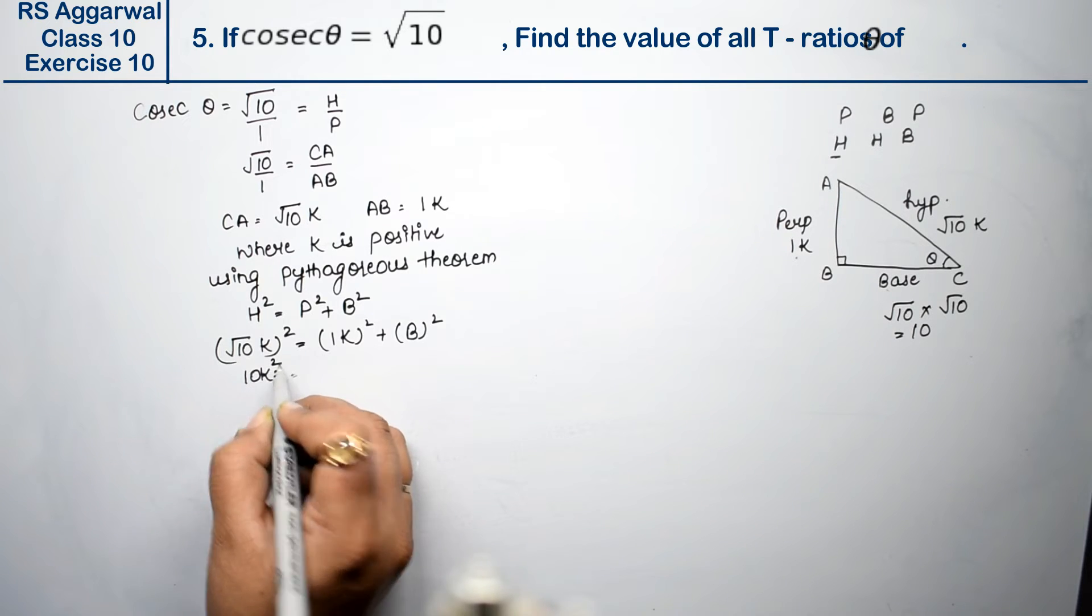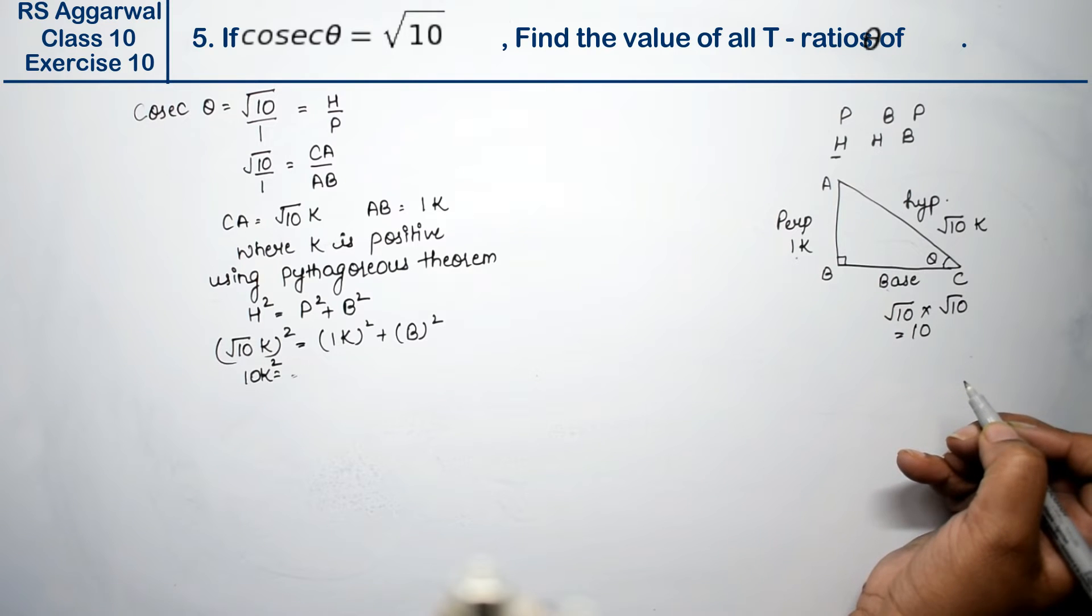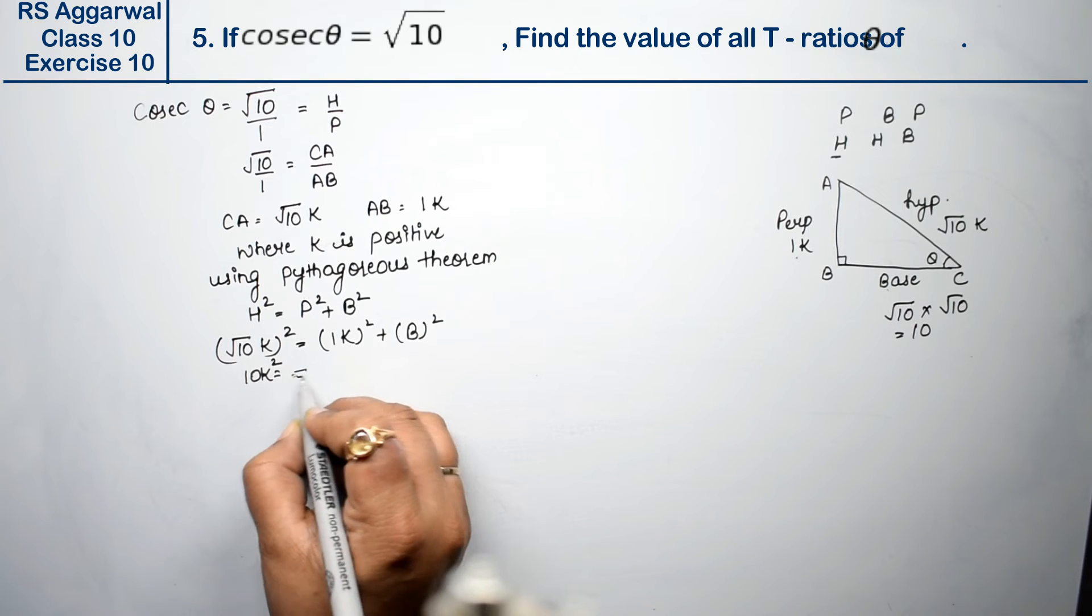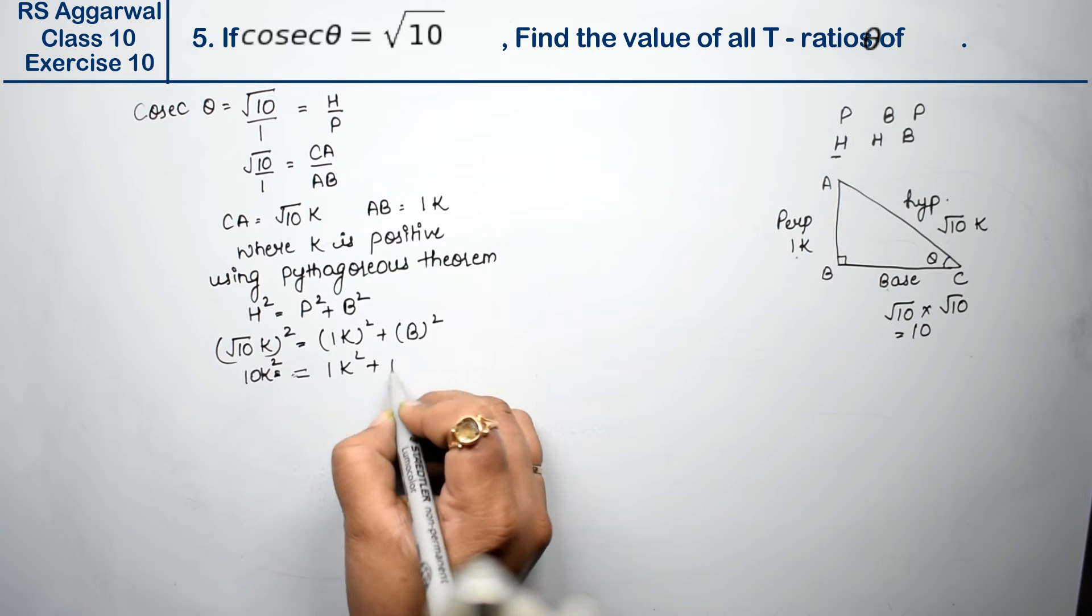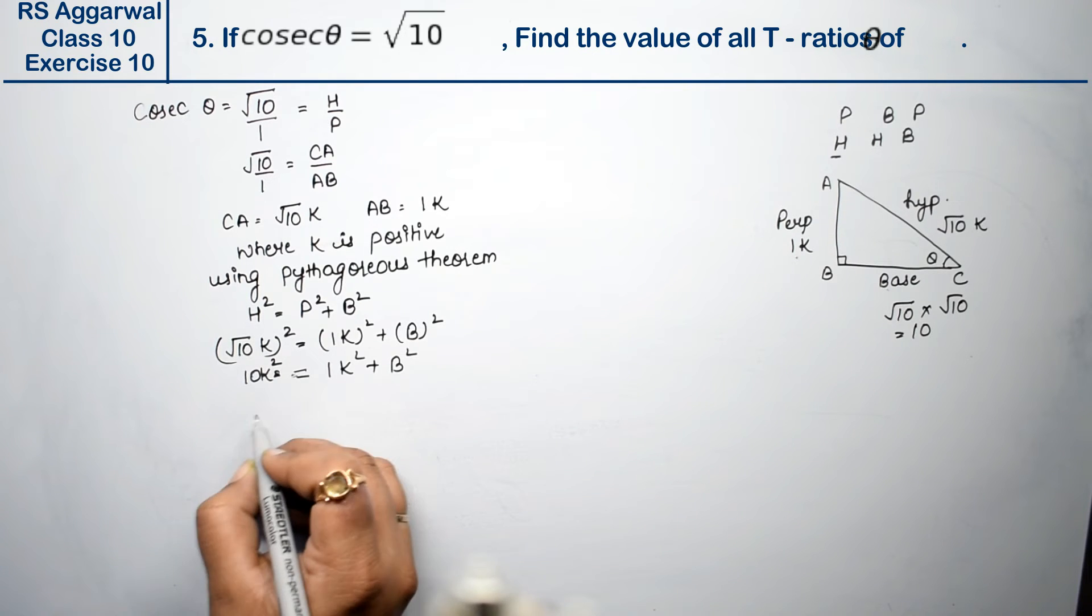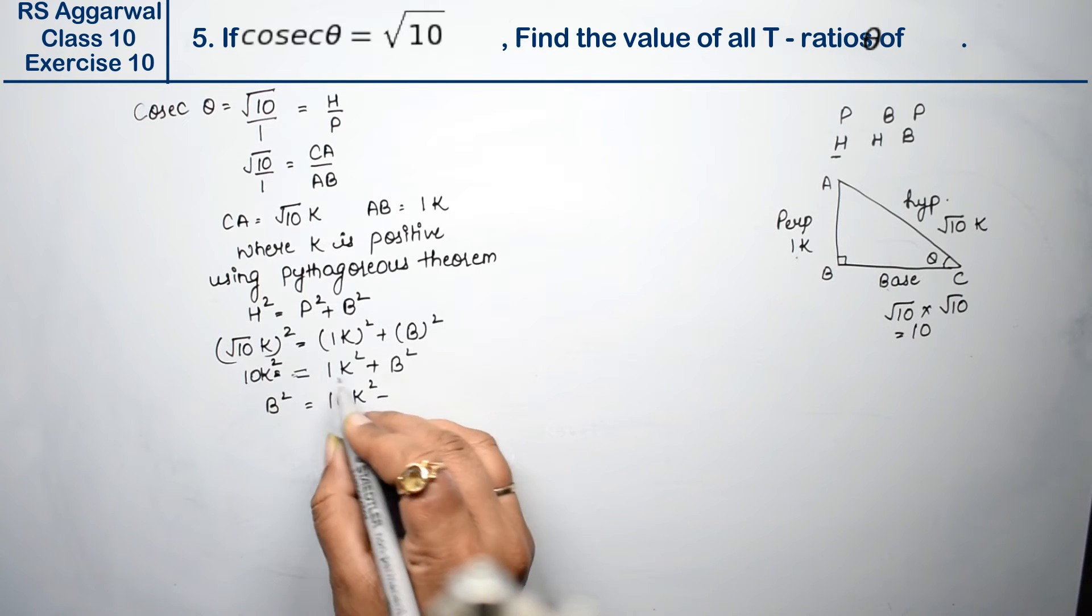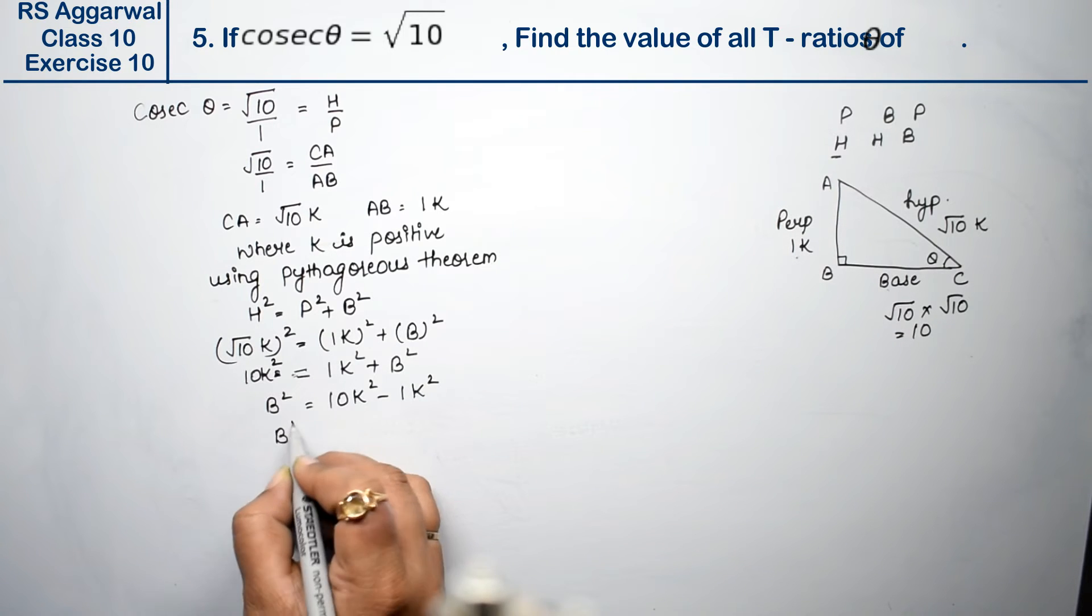This is the square root formula. Square root cancels with square. If someone doesn't know square root, you can watch class 8th videos. 1 squared is 1. This goes to the other side. So B square minus, this plus becomes minus here.